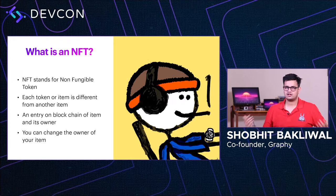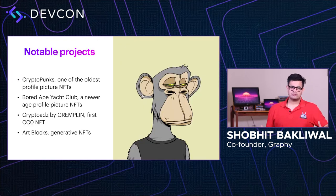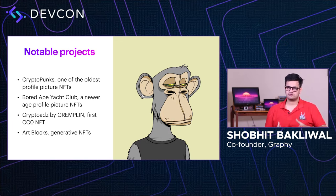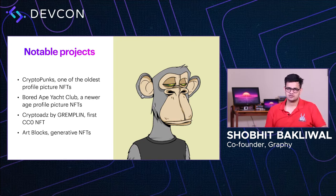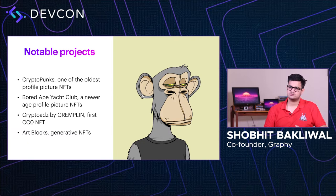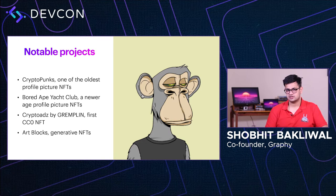Now let's talk about some notable projects. There's CryptoPunks, which is one of the oldest PFP projects. PFP projects give you an image — JPEGs as we like to call them — which you can use on social media as a profile picture. CryptoPunks was one of the first PFP projects, a 10K collection released on the Ethereum chain. More recently, Bored Ape Yacht Club has become one of the biggest PFP projects, snatched up by Steph Curry, a big basketball player, and Neymar Jr., a big football player, and a bunch of other celebrities.